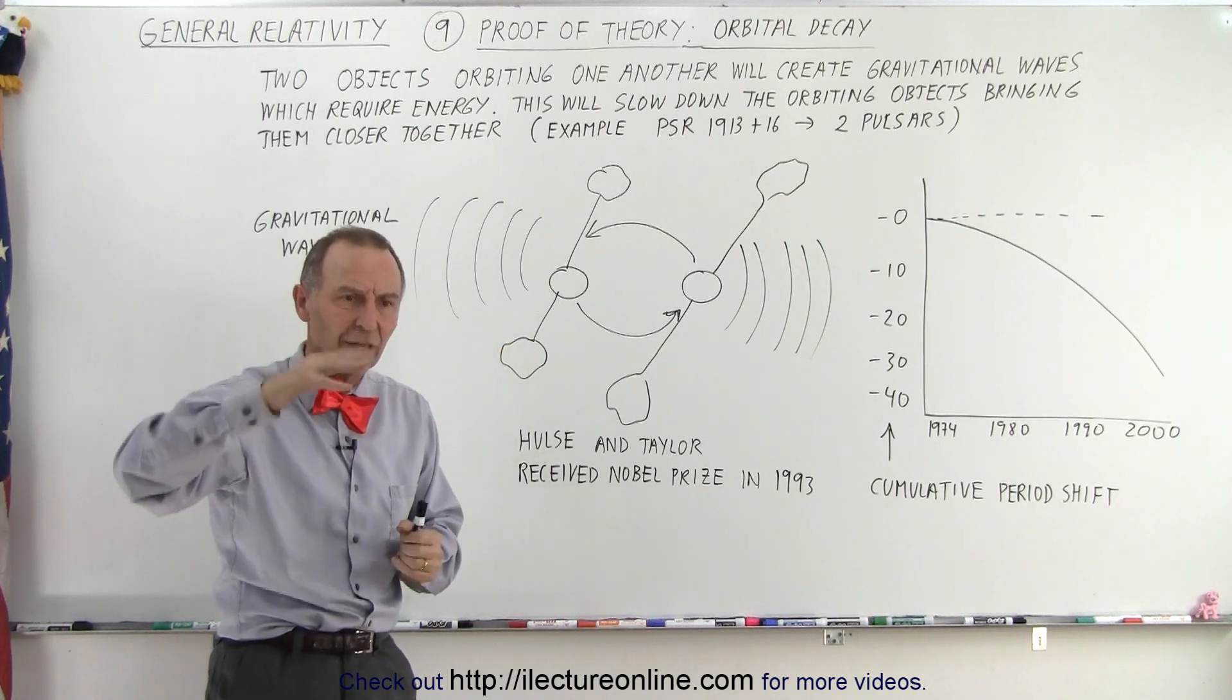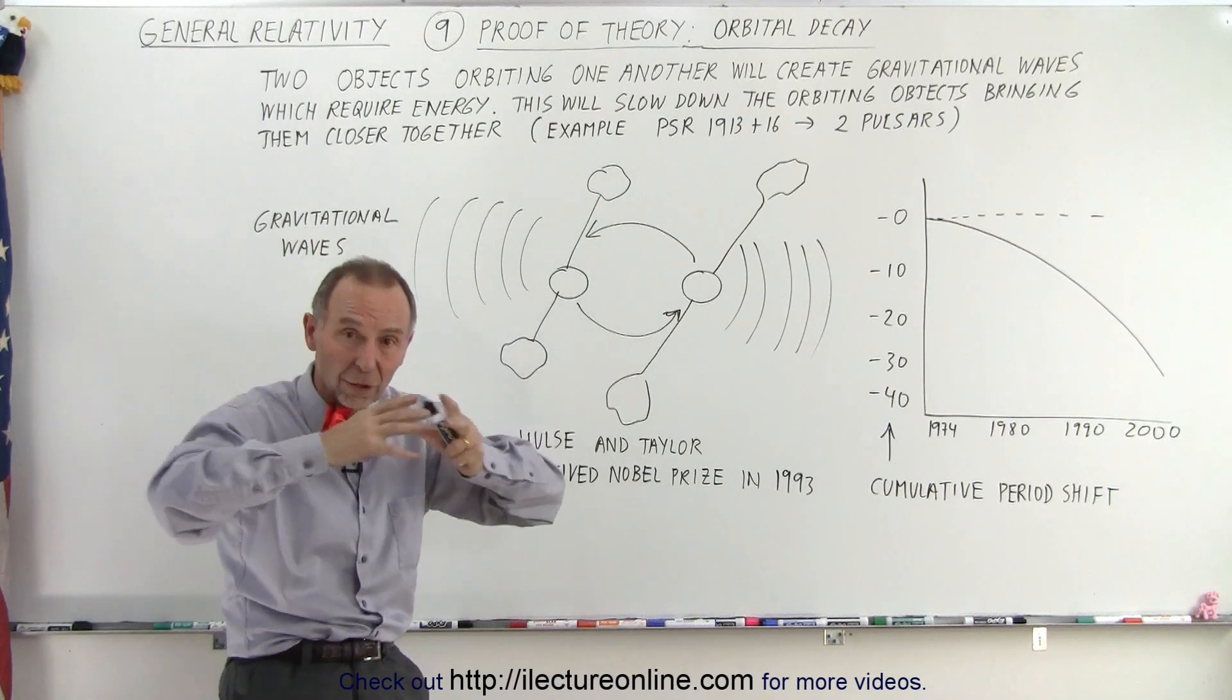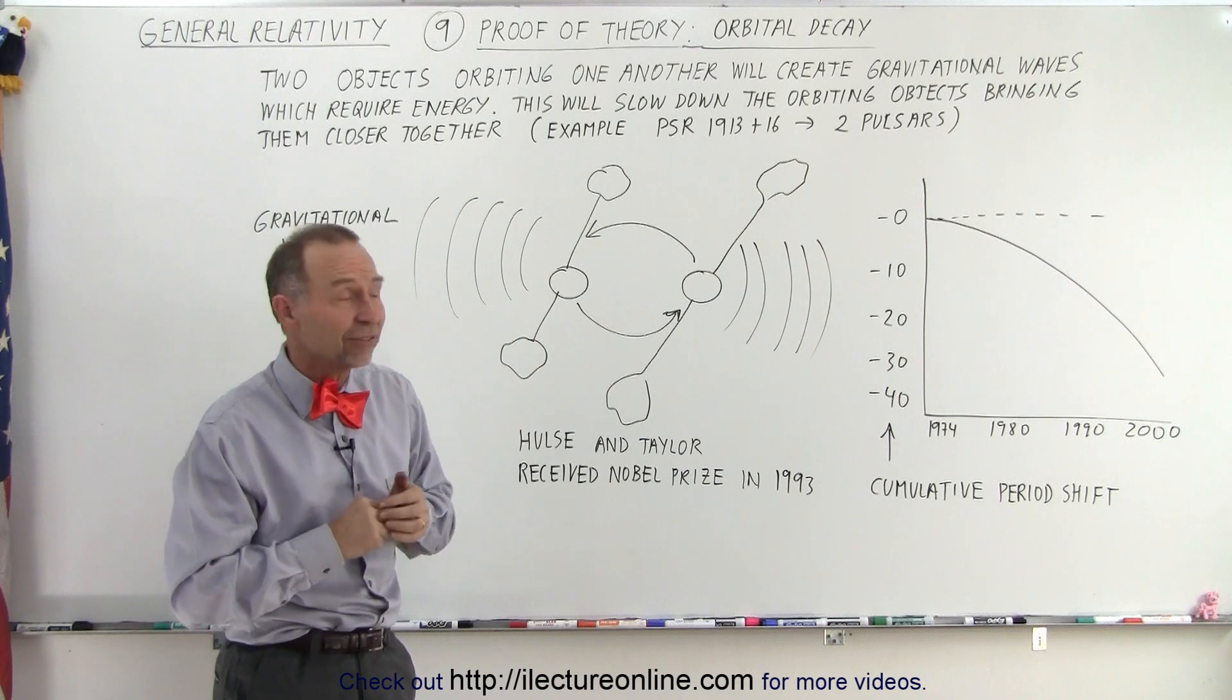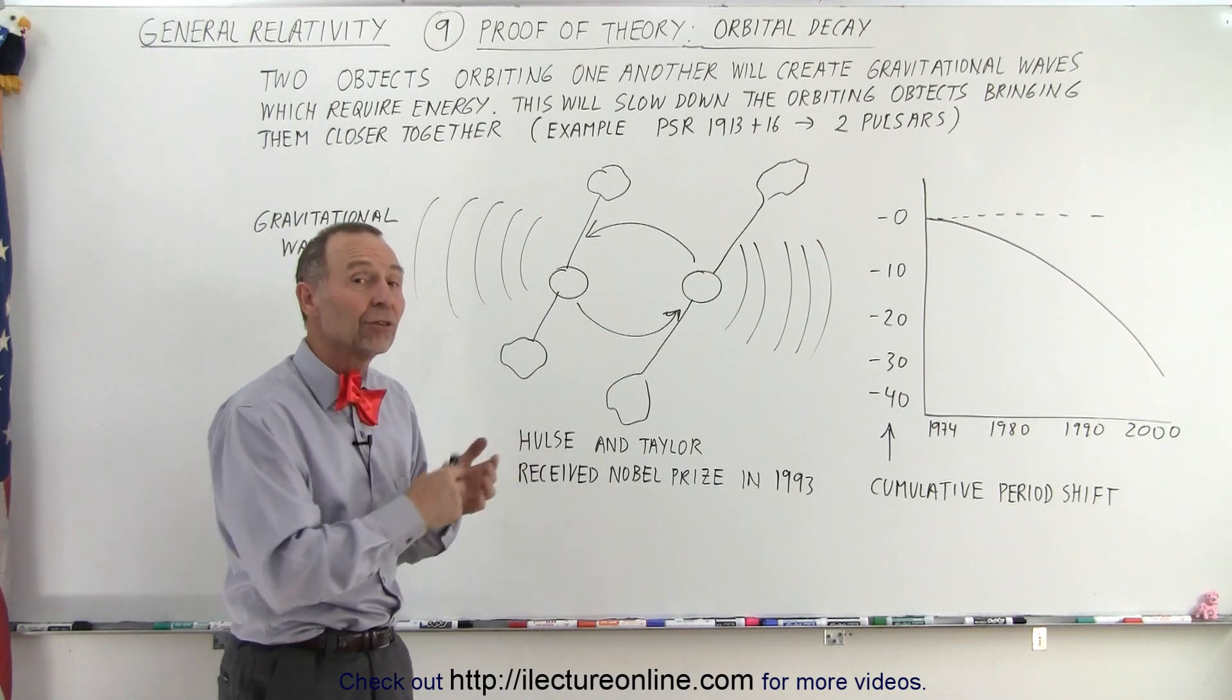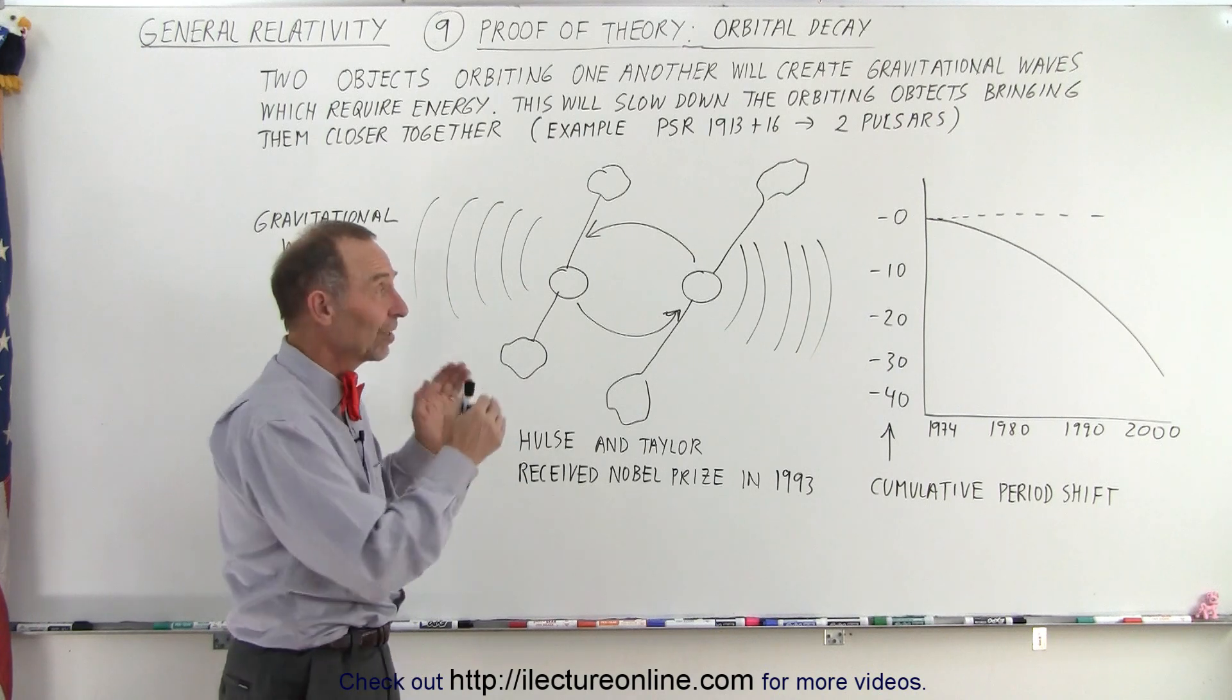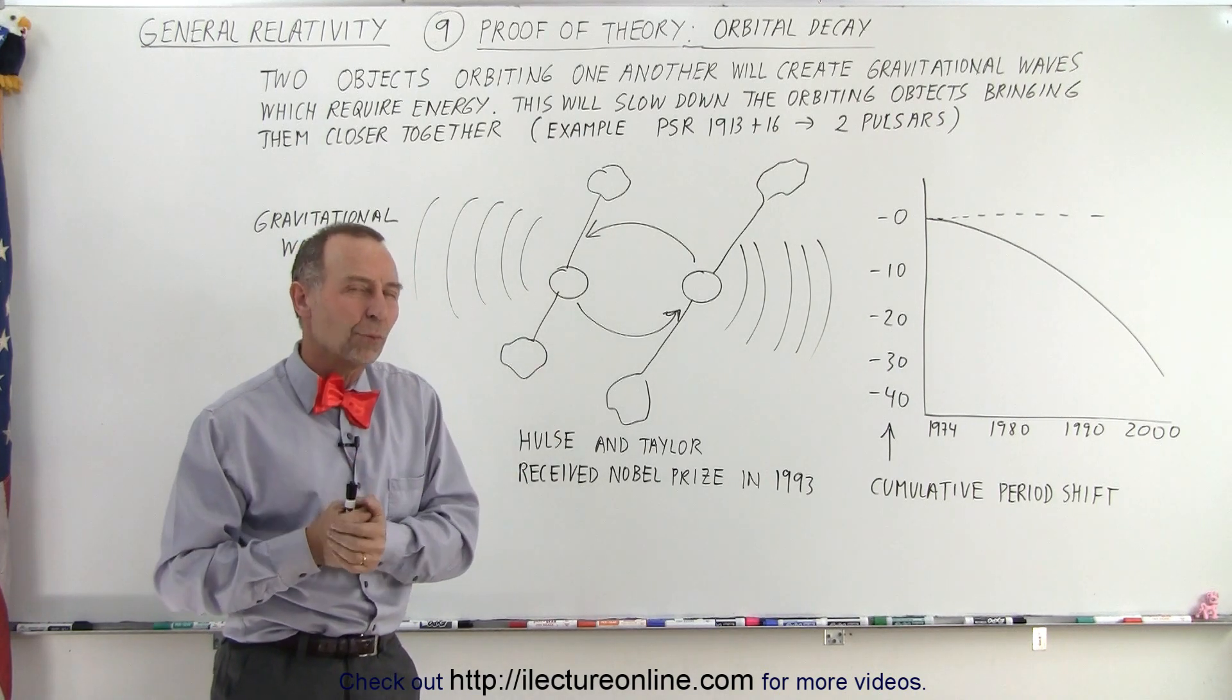There would be then variations in the curvature of space, and then those variations would then move out from that source at the speed of light. At least, that was the prediction by Einstein, and certainly, we're beginning to look as if that is actually correct. So this is a direct result of the theory of the general relativity.